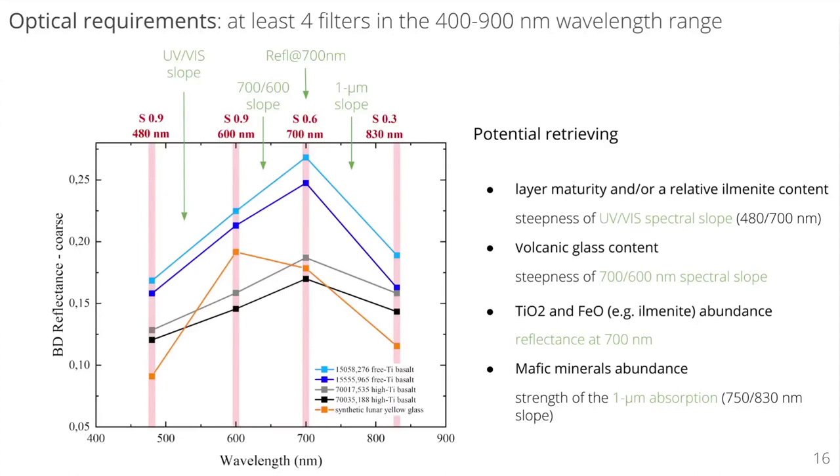Concerning the optimal requirements useful to retrieve compositional information, we suggest the use of four filters centered at 480 nanometers, 600 nanometers, 700 nanometers and 830 nanometers. Of the retrievable spectral parameters, the UV and VIS spectral slope is indicative of layer maturity, grain size and ilmenite content. High reflectance values joined at attenuated 600 to 700 nanometer slopes are potentially associated with pyroclastic materials. The higher the reflectance at 700 nanometers, the lower the titanium and iron oxide abundances. Finally, the 750 to 830 nanometer slope, which points to the 1 micrometer absorption strength, is indicative of the mafic minerals abundance.